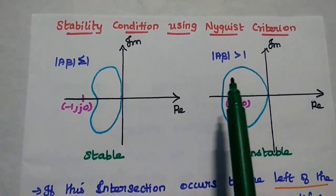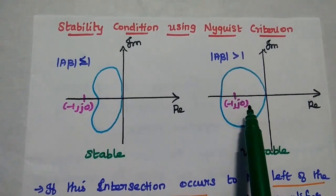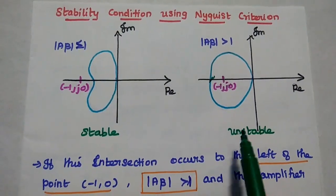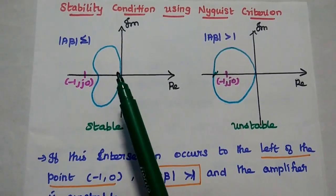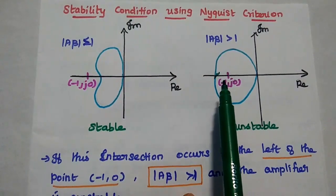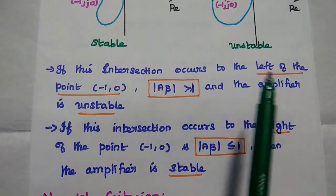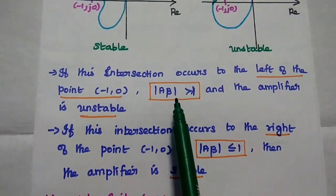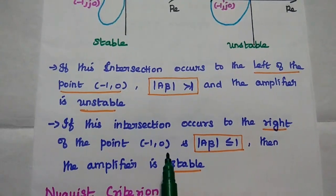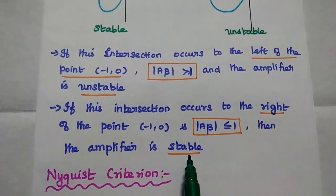If the Nyquist plot intersects the real axis to the left of the point minus 1 comma j0, the magnitude of A·beta is greater than 1, and hence the system is unstable. To summarize: if the intersection occurs to the left of minus 1 comma 0, then |A·beta| is greater than 1 and the amplifier is unstable; if the intersection occurs to the right of minus 1 comma 0, then |A·beta| is less than or equal to 1 and the amplifier is stable.